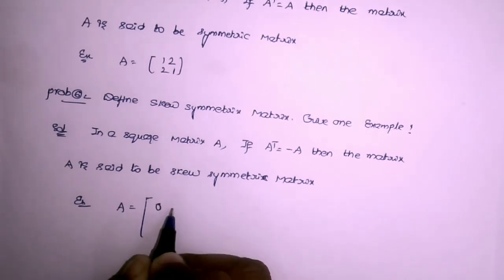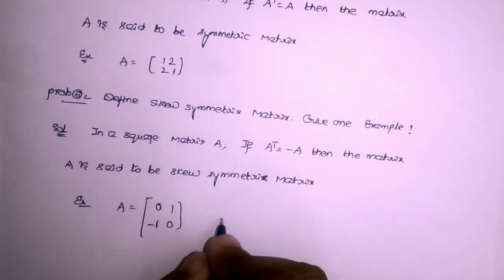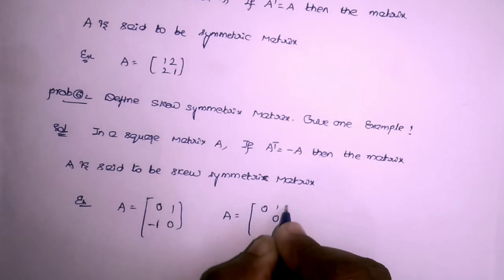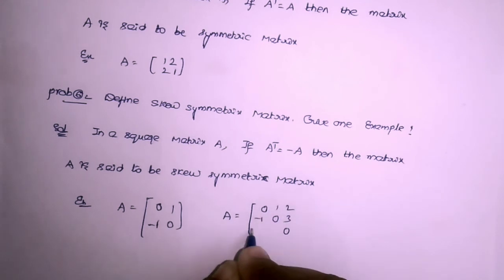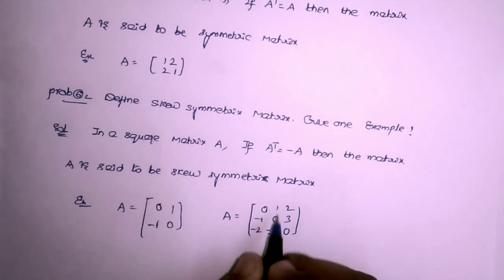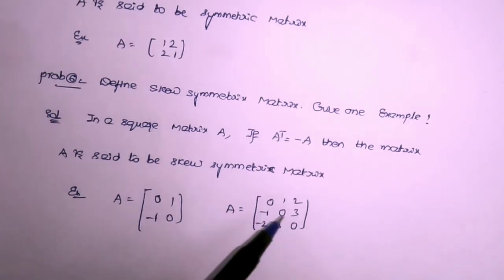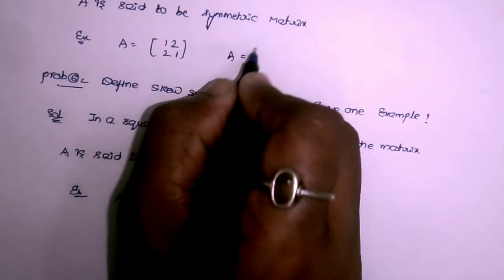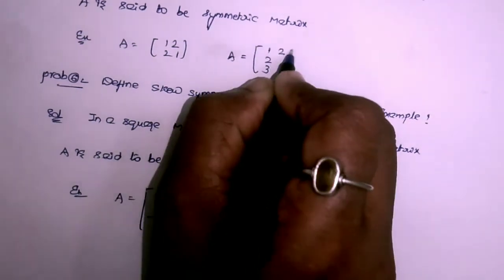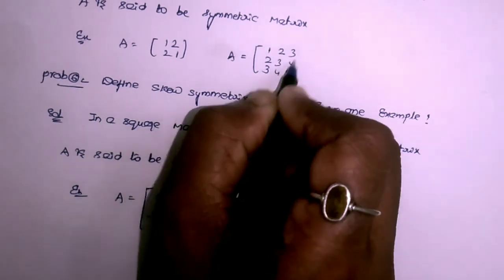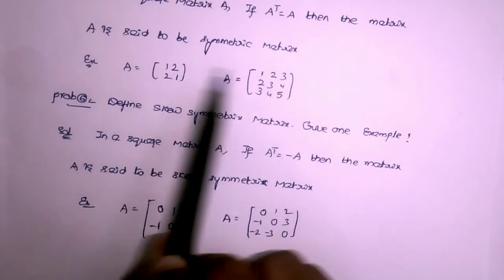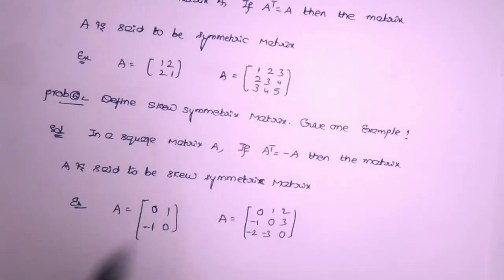Always remember that in a skew-symmetric matrix, all diagonal elements are equal to 0. Example (2×2): [[0,1],[-1,0]]. For a 3×3 example: the diagonal elements are 0, and we place values 1,2,3 above the diagonal and -1,-2,-3 below. When you take the transpose, you get the same matrix values but with changed signs, confirming it is skew-symmetric.